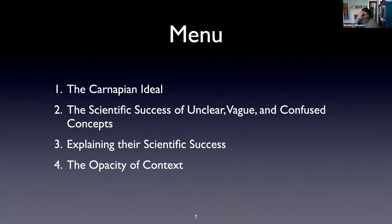Then I will talk about why concepts that seem deficient by the light of the Carnapian ideal turn out to be successful — what explains why science often needs such concepts. We'll conclude that there is no intrinsic property that determines whether a concept is deficient; it's always a relational property, depending on the concept and its context of use. The worry is that it is extremely opaque when a scientific context requires the improvement of a scientific concept.